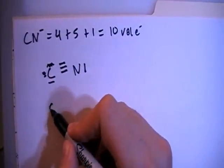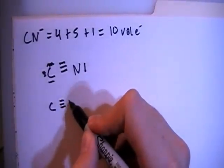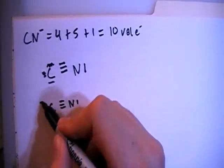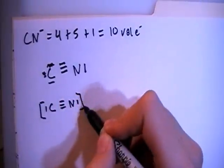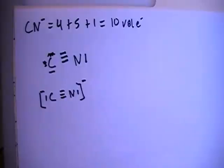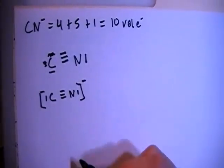So there's carbon, triple bond, nitrogen, lone pair over here, lone pair over here, and then we also have our brackets, because this is an ion, a charged particle.